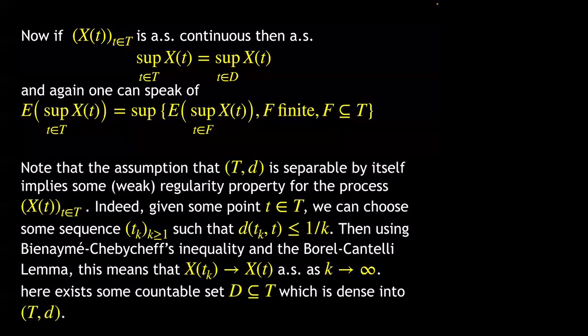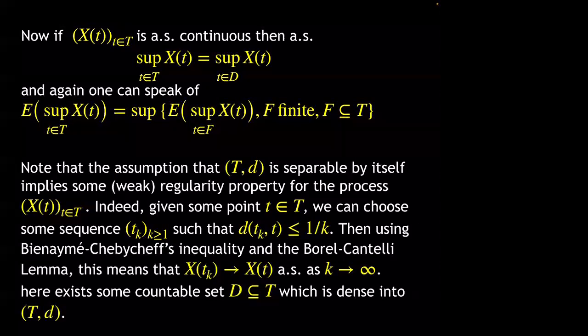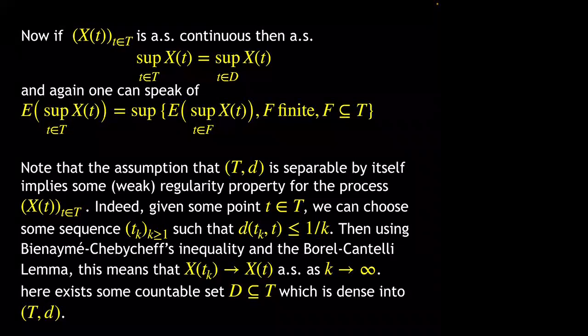It is not at all clear that a Gaussian process will always have an almost surely continuous version. Nevertheless, even without a continuous version, one always has some regularity.